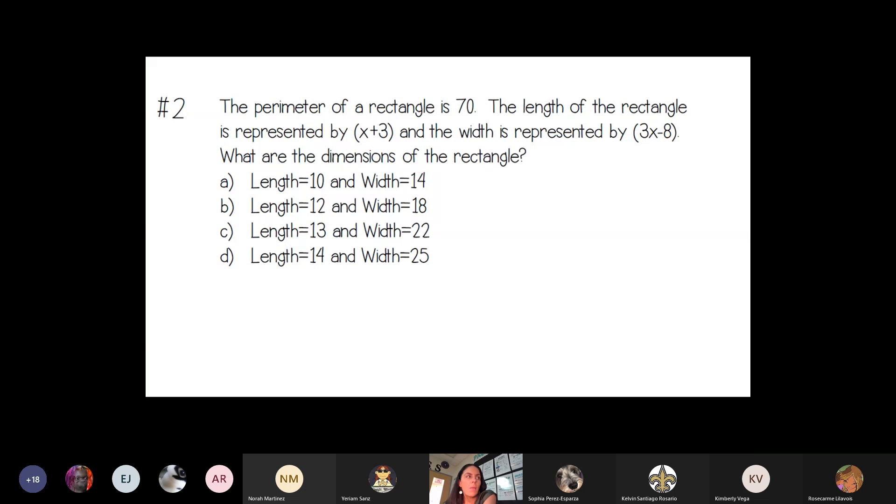Number 2 on warm-up 10, the perimeter of a rectangle is 70. Remember, perimeter means to add, is 70, so it's going to equal 70. So the perimeter is equal to 70. The length of the rectangle is represented by x plus 3, and the width is represented by 3x minus 8. What are the dimensions of the rectangle?